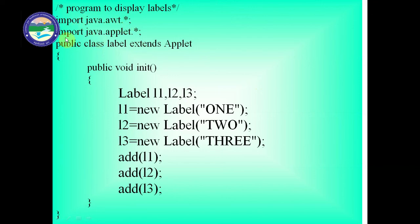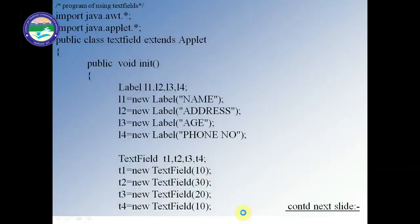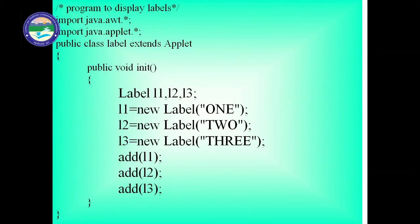Here is a complete example. We write 'import java.awt.*' and 'import java.applet.*', then 'public class Label extends Applet'. In the init() method we define three labels: 'Label l1 = new Label("one")', 'Label l2 = new Label("two")', 'Label l3 = new Label("three")'. Then we call add(l1), add(l2), add(l3) to display them on the applet. In the next class we will discuss more programs.